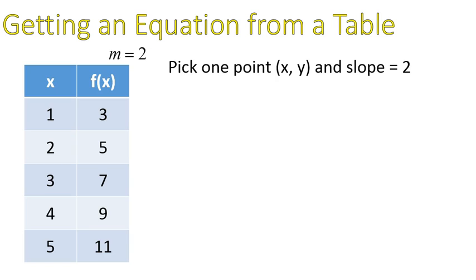Next step, I need to pick one point, an xy point, and I know my slope is 2. I'm going to take those three pieces of information, an x value, a y value, and my slope of 2, and I'm going to put them into this equation. My x value will go in there. My slope is m, and my y value is going to go here. So I can pick any point. I'm going to pick the point 4, 9. My x value is 4. My y value is 9. My slope is 2.